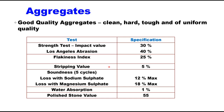Aggregate should be of good quality — clean, hard, tough, and of uniform quality. Specifications suggested by IRC code and SP-20 for testing suitability of aggregates to be used in premix carpet are given in a table. Strength can be estimated either by impact test or by Los Angeles abrasion test; it should not be more than 30% for impact value or 40% for abrasion value.